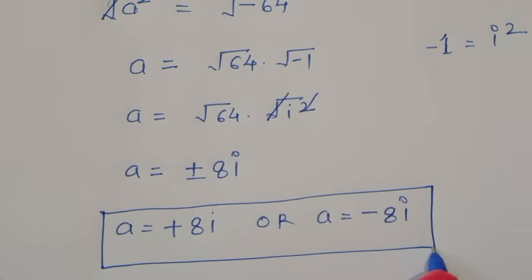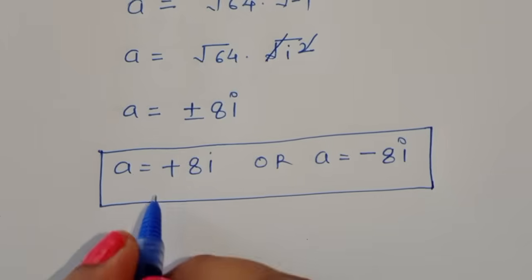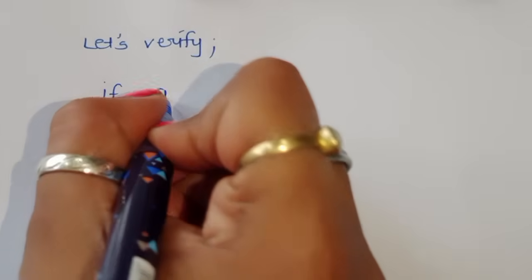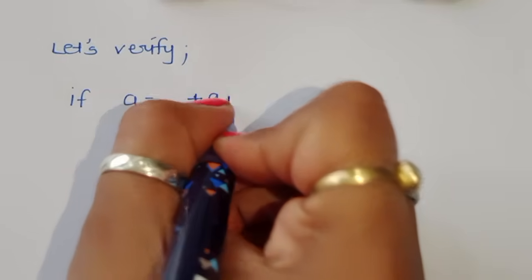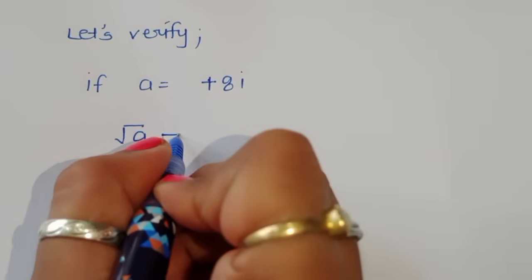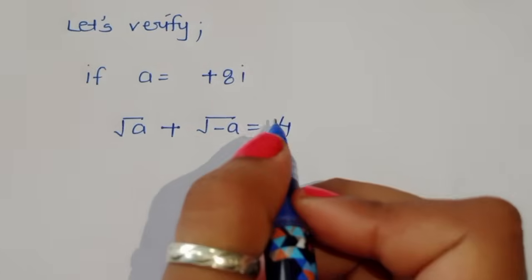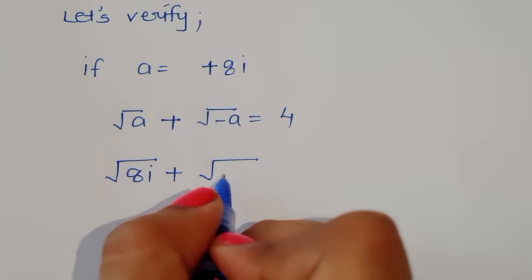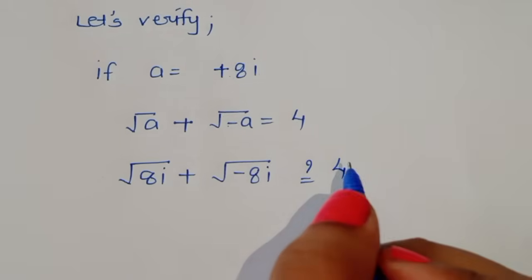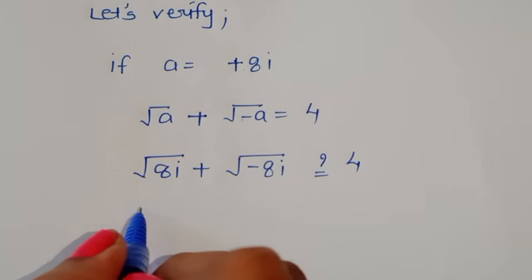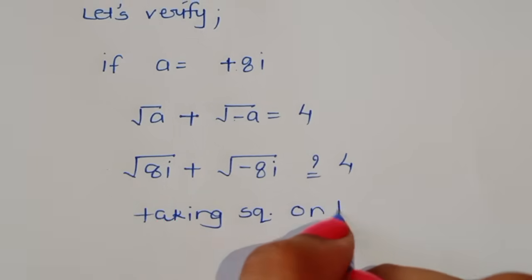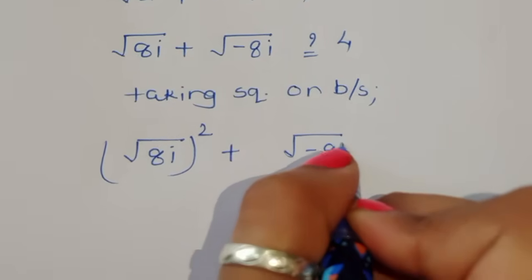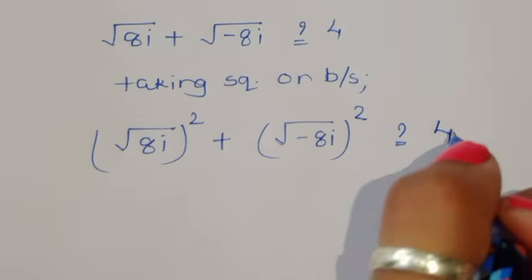This is the solution for this equation: the value of a is plus 8i or minus 8i. Let's verify this is correct. If a equals plus 8i, substituting into the original equation: square root of 8i plus square root of minus 8i, question mark, equals 4. Taking square on both sides to cancel the square roots: (√8i + √(−8i))² question mark 4².